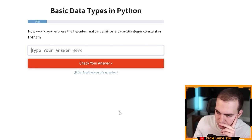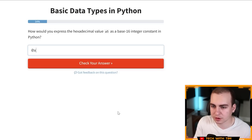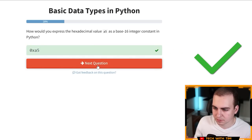How would you express the hexadecimal value a five as a base 16 integer constant? Okay. So I believe that the hexadecimal in Python is zero X and you lead zero X now a five. I think I can literally just write a five. Yeah, I think that's fine. Let's try that. Okay. Let's go. Nice.